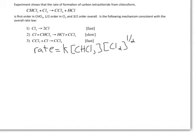To determine the rate law based on a mechanism, we need to find the slowest or the rate-determining step. Based on the information given, we know that the second step is the slow step or the rate-determining step. If we have a reaction mechanism with elementary steps, we can write the rate law for each of those elementary steps, and the rate law for the rate-determining step is going to be the same as the rate law for the overall reaction.